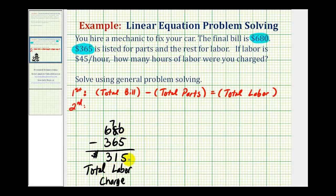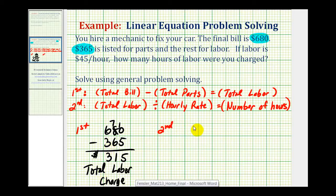Now for the second step, since it costs $45 per hour, we want to know how many 45s there are in 315, which means we'll divide 315 by 45. So our second step is to take the total labor charge and divide by the hourly rate for labor. This will give us the number of labor hours. So we have 315 divided by 45.